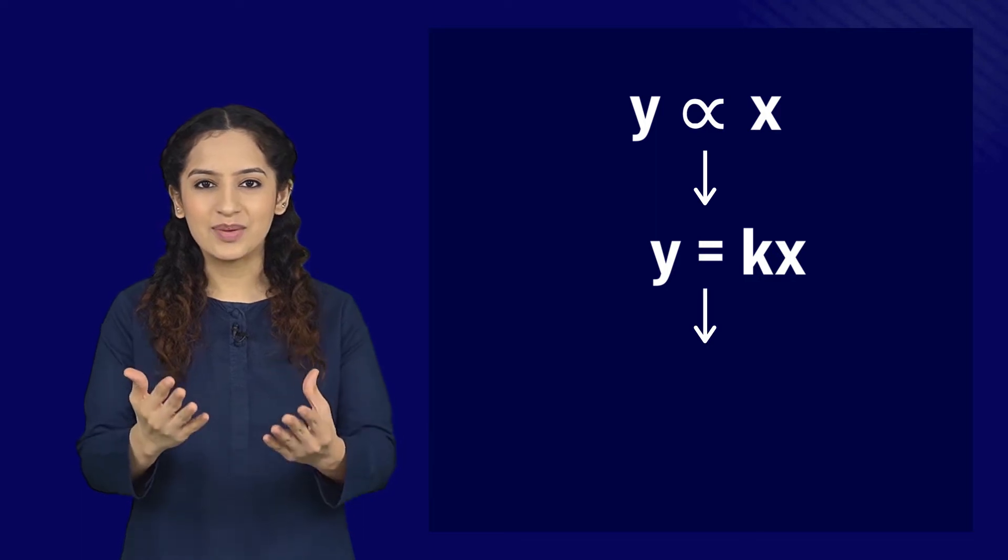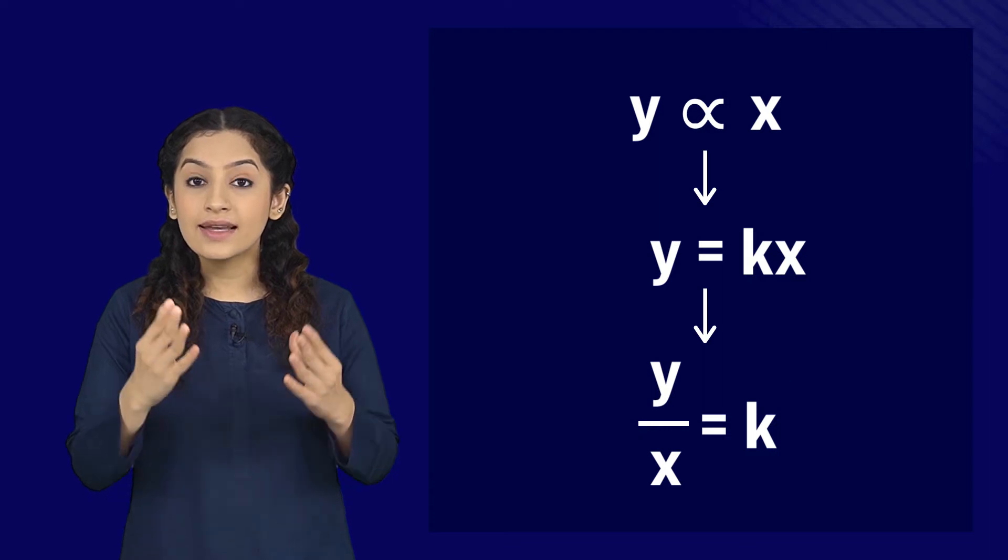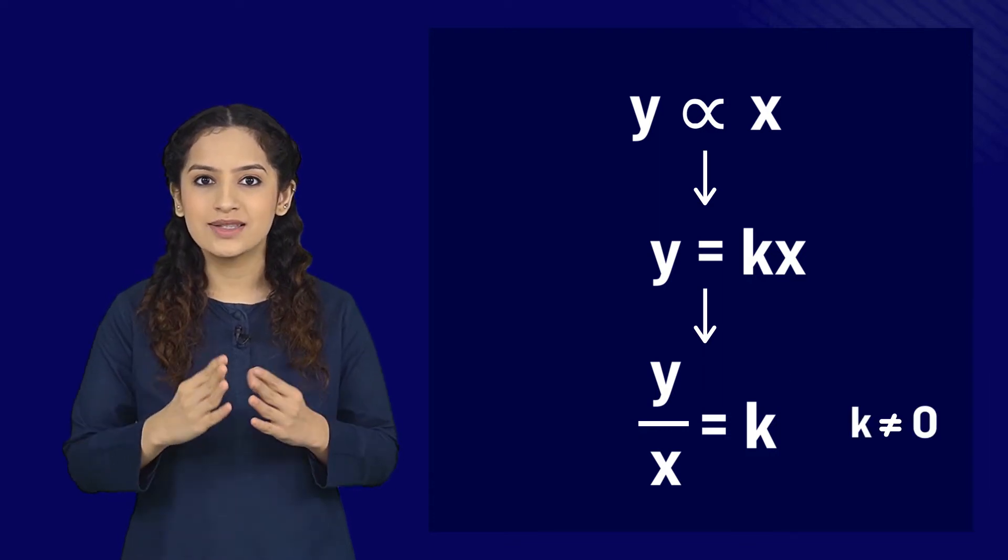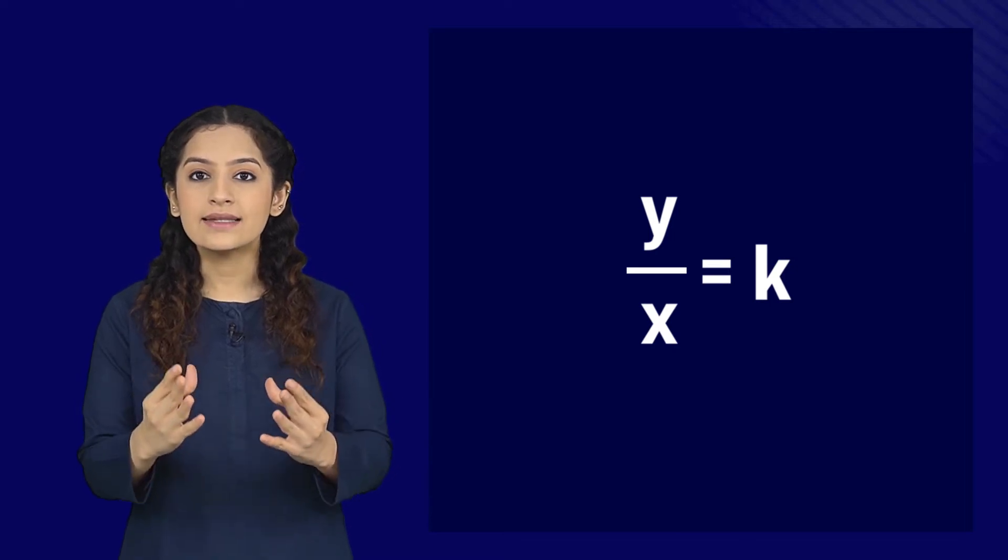Further simplify it and we get this. This k is called the constant of variation and can be any number but not zero. To understand what it is saying, let's take an example.